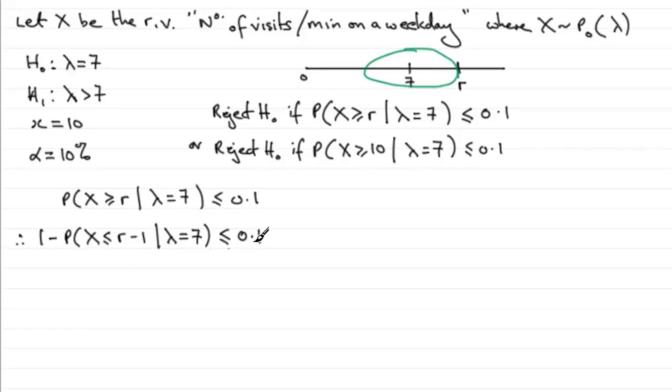Now if we've got this equation, then if we make this the subject by adding it to both sides and taking 0.1 from both sides, we'd have 1 minus 0.1, which is 0.9, must be less than or equal to this probability. In other words, this probability, X is less than or equal to R minus 1, given that lambda equals 7, must be greater than or equal to 90% or 0.9.